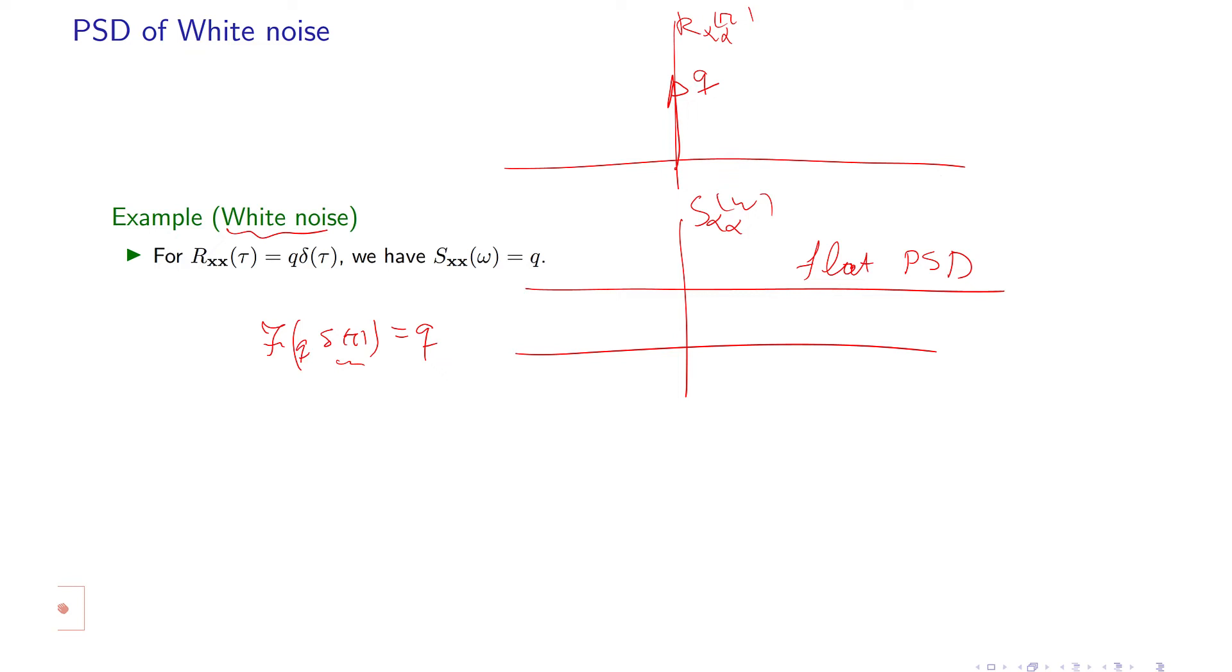It's a stationary random process with a flat power spectral density which has equal energy at all frequencies. It's called white. So white noise is a stationary random process which has identical amounts of energy at all frequencies.